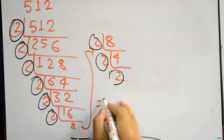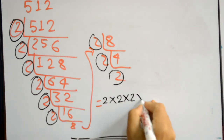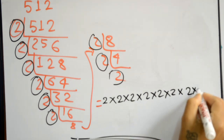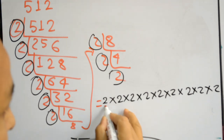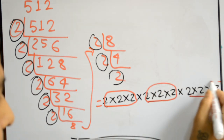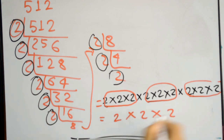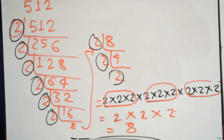We have nine 2s as factors. We group them into three groups of three 2s each: 2 times 2 times 2, 2 times 2 times 2, and 2 times 2 times 2. From each group we select one 2. The product is 2 times 2 times 2, which equals 4 times 2, which is 8. So 8 is the cube root of 512.